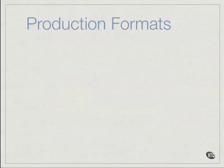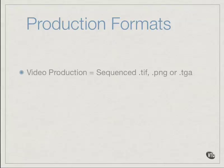Let's take a look at some broad brush strokes of format considerations. When working with video production, especially if you're providing files for somebody else to work with, always ask them their preference for receiving files. For animations and other types of digital video or 3D rendering, video producers generally prefer to work with sequenced files — sequenced TIFF files, PNG files, or TGA files, and sometimes JPEG files. TIFFs, PNGs, and TGAs are preferred because they can maintain alpha information, giving the video producer the ability to use a background with the animation or not.